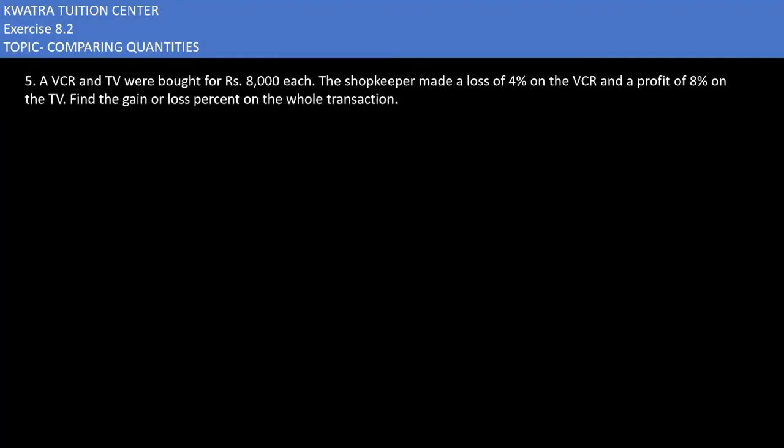Okay, now we have the next one which is question number five. It says a VCR and TV were bought for rupees 8,000 each. The shopkeeper made a loss of 4% on the VCR and a profit of 8% on the TV. Find the gain or loss percent on the whole transaction.